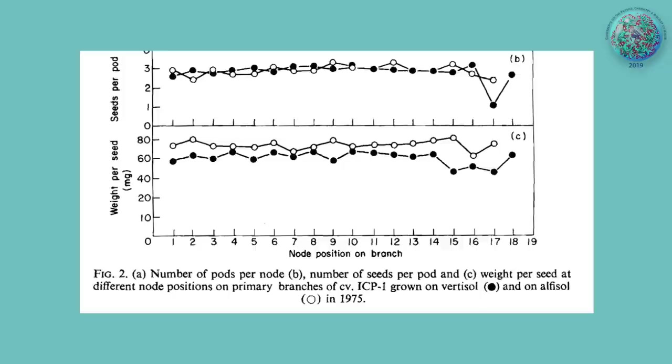And what I found was, if you look at the formation of pods in pigeon peas, this is the first formed pods, and then you go along. These are later and later, as flowering goes on and on, they keep forming pods. And the number of seeds per pod remains fairly consistent, and the weight per seed remains fairly consistent.